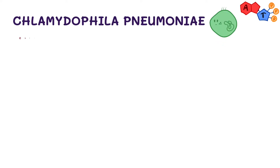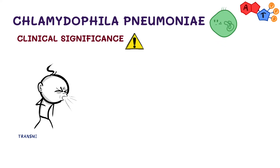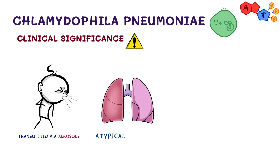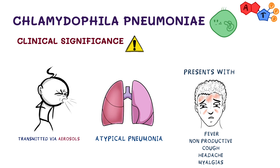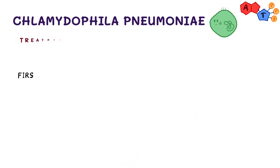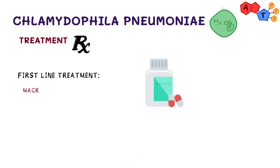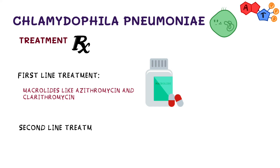Let's briefly cover Chlamydophila pneumoniae and Chlamydophila psittaci. Chlamydophila pneumoniae is transmitted by aerosols and results in atypical pneumonia, presenting with fever, non-productive cough, headache, and myalgias. The first-line treatment is a macrolide such as azithromycin or clarithromycin, while the second-line treatment is oral doxycycline.